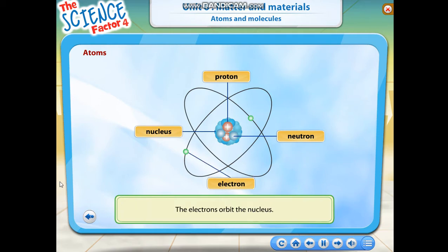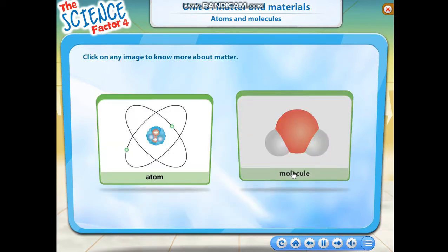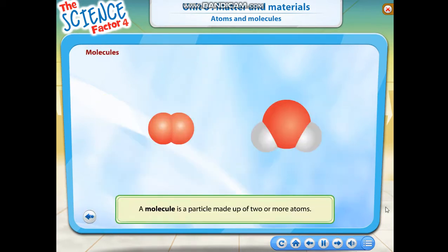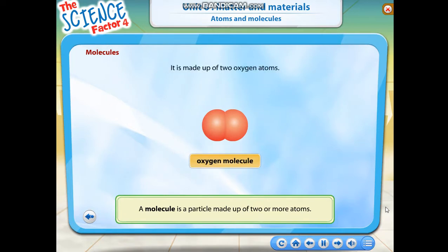The electrons orbit the nucleus. A molecule is a particle made up of two or more atoms. This is an oxygen molecule.